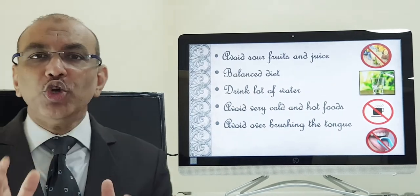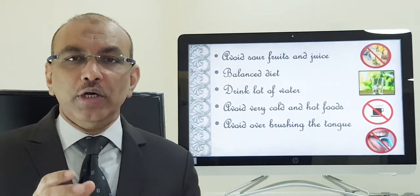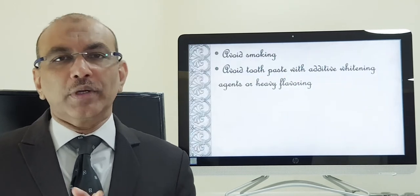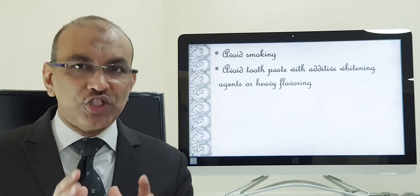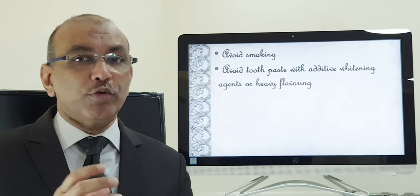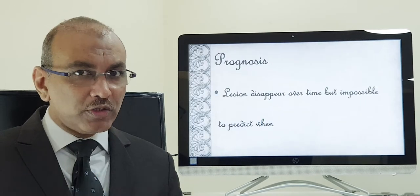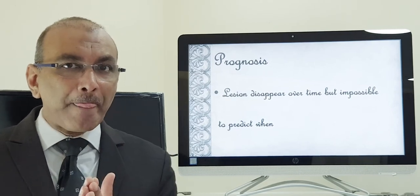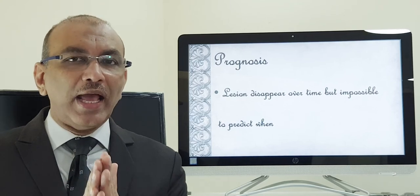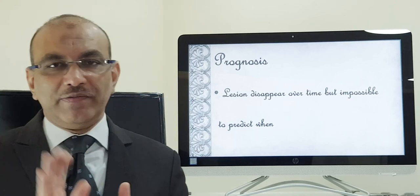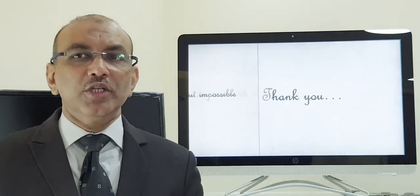Try to avoid very cold, very hot, or spicy foods. If you are a smoker, try to quit smoking. For toothpaste, you do not need to change it, and especially do not buy over-whitening or flavoring types. Regarding prognosis, the pattern keeps on changing and may increase on and off, but over a course of months it will disappear by itself without any specific treatment. That is all about geographic tongue. Thank you so much.